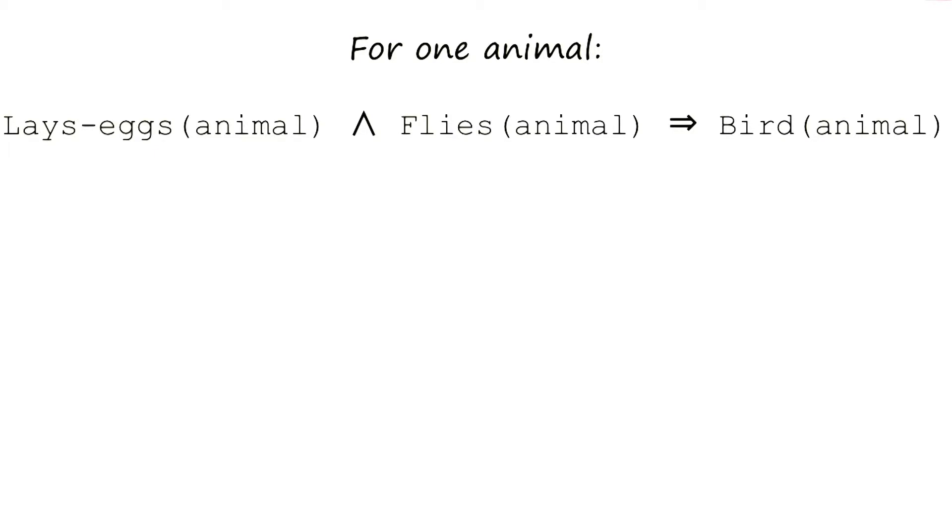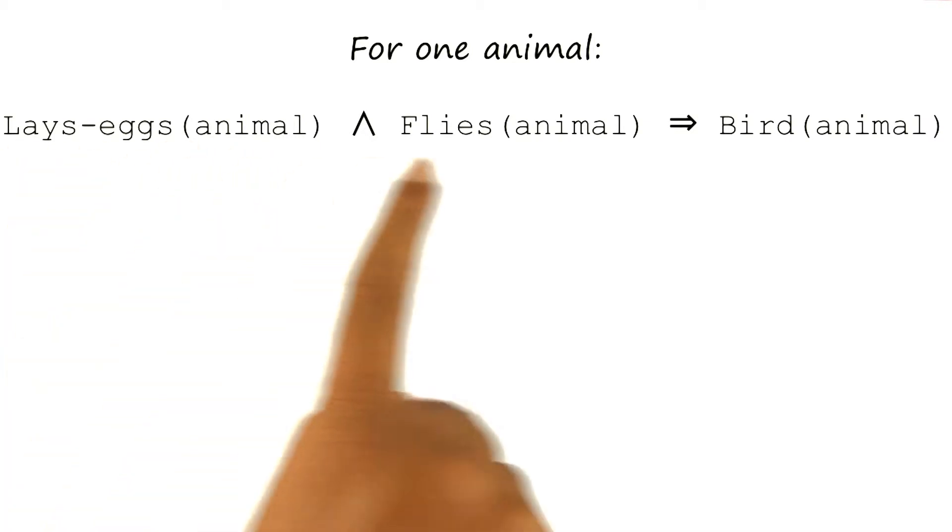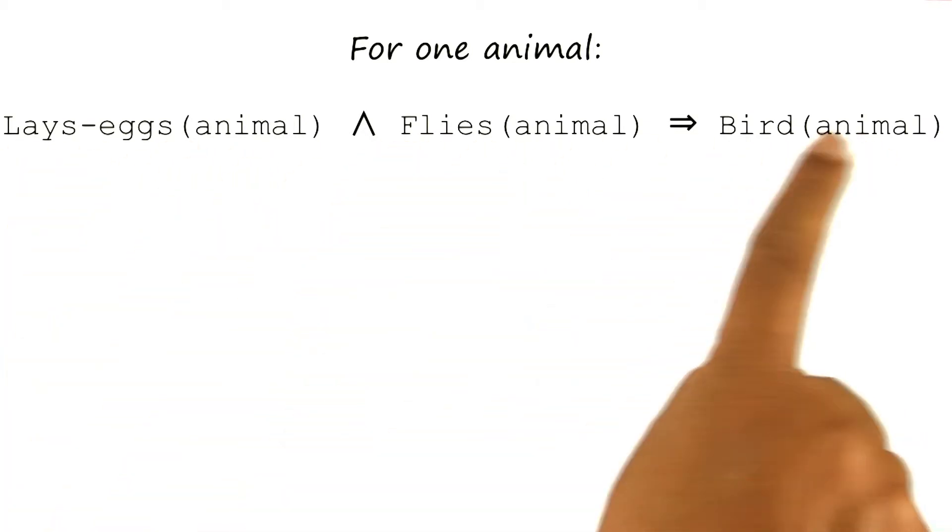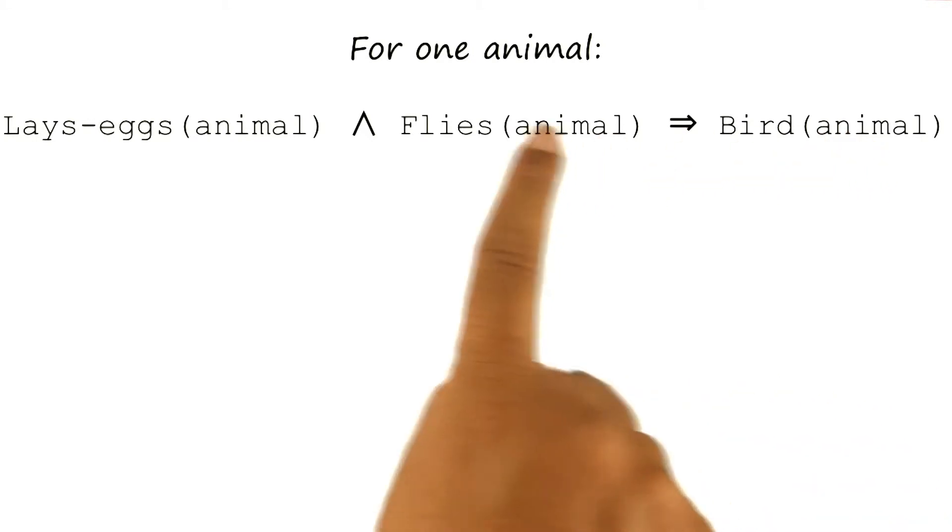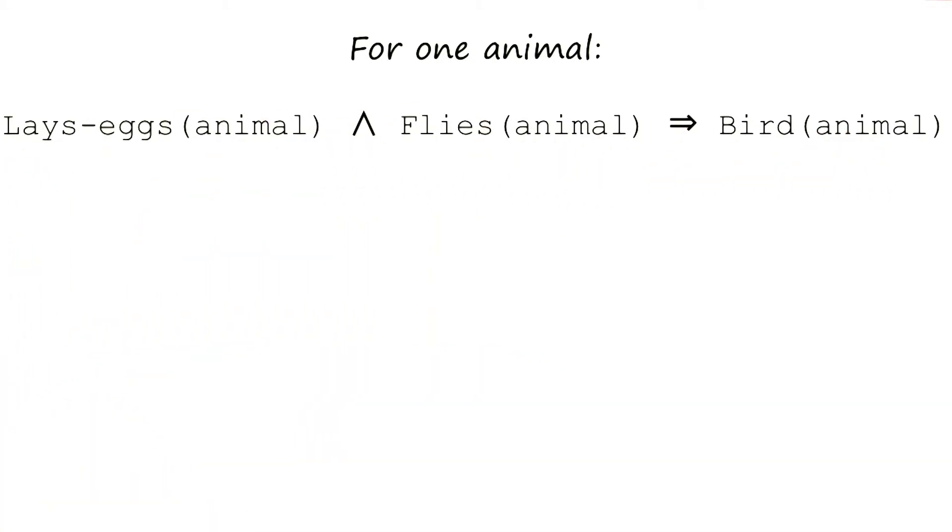So as an example, I may have a sentence which says if the animal lays eggs and the animal flies, then the animal is a bird. And here I'm talking about a specific animal. But sometimes I might want to talk about animals in general, any animal, all animals.